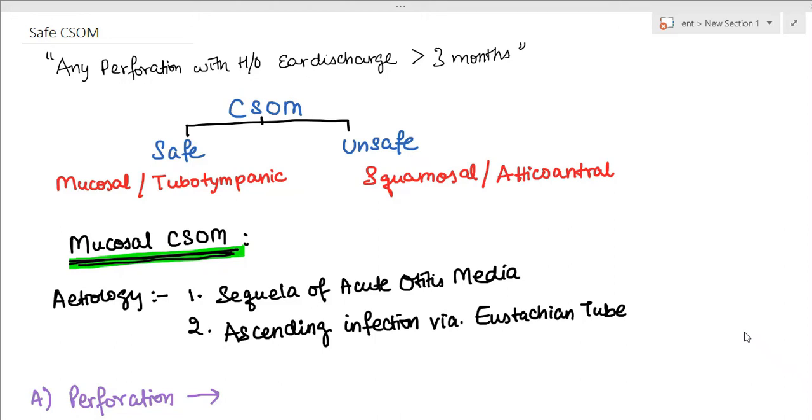Today we will be talking about CSOM and more particularly about safe CSOM. CSOM is a long-standing infection of part or whole of the middle ear cleft characterized by ear discharge and a permanent perforation. Any perforation with a history of ear discharge for more than three months can be considered CSOM.